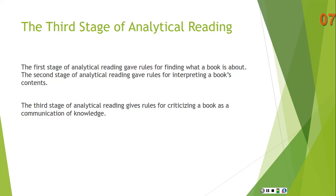That brings us to the third stage of analytical reading. In the first stage, we gave rules for finding what a book is about. In the second stage, we gave rules for interpreting a book's contents. With the third stage, we have rules for criticizing a book as a communication of knowledge. Those are the three ways to analytically read a book: you find out what it's about, you interpret it, and then you criticize it. Criticizing it doesn't necessarily mean you disagree — being critical might mean analyzing it in an in-depth way, even if you wholly agree with it.